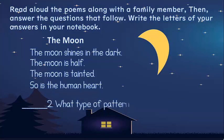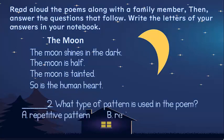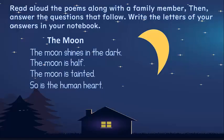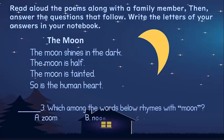Number two: What type of pattern is used in the poem? A. Repetitive pattern. B. Refrain. Very good. Number three: Which among the words below rhymes with the word moon? Take note, kids — rhymes are words that have the same ending sounds. So which of these words rhyme with moon? A. Zoom. B. Noon. C. Room. Correct — letter B, noon.